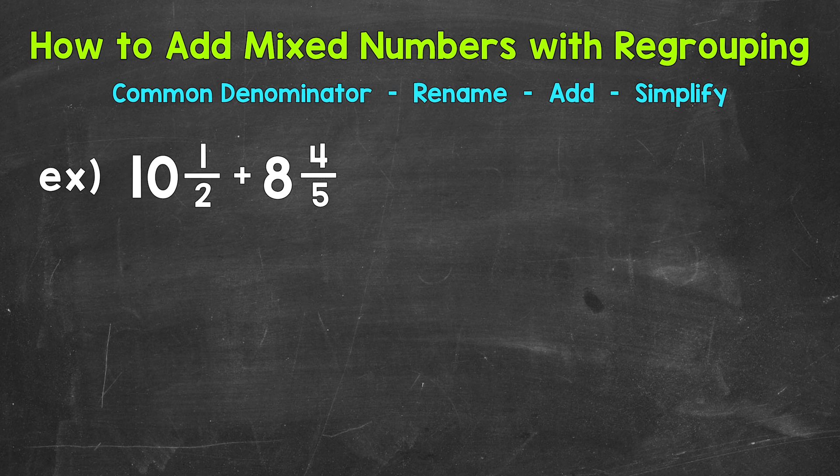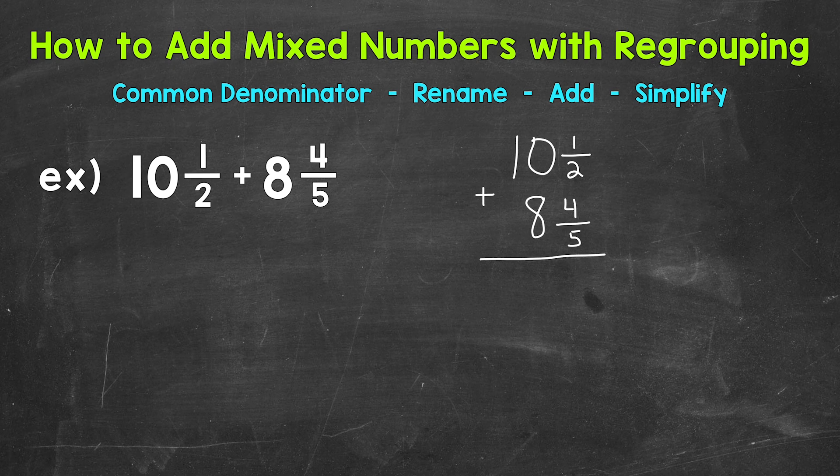So the first thing that I'm going to do, I'm going to rewrite this problem vertically, lining up the fractions and whole numbers. So we have 10 and a half plus 8 and 4 fifths. When we add mixed numbers, we can add the fractional part of the mixed numbers and then add the whole numbers. So let's do one half plus 4 fifths first.